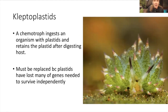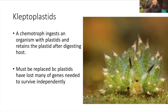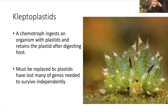Kleptoplastids occur when a chemotroph ingests an organism with a plastid and digests almost everything except for the plastid. It keeps just enough of that organism alive to keep the plastid alive as long as possible. It's not like that predatory ciliate that was just going to digest everything. These guys eat organisms with plastids but keep them alive as long as they possibly can. Eventually they'll digest them, but they get a lot more mileage out of it - they're kind of stealing the plastids.